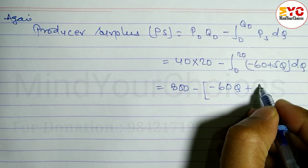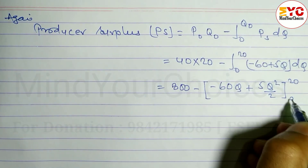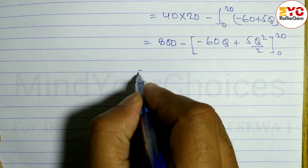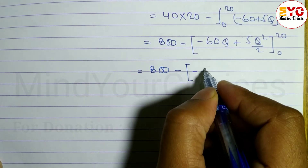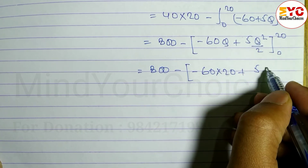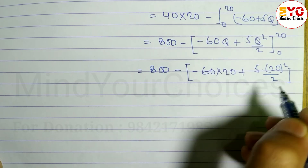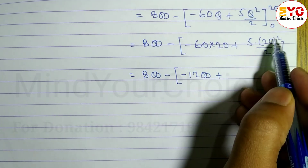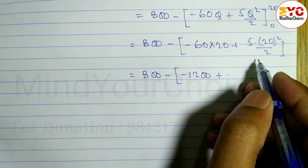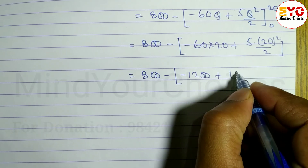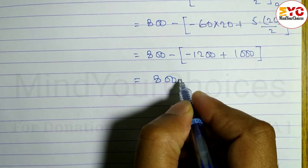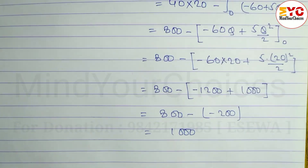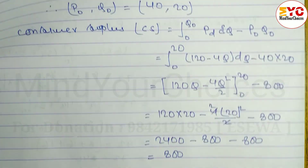Integrating: -60Q + 5Q²/2, evaluated from 0 to 20. Putting Q = 20: -60 × 20 + 5 × 20²/2 = -1200 + 5 × 400/2 = -1200 + 1000 = -200. So producer surplus = 800 - (-200) = 800 + 200 = 1000. Therefore producer surplus PS = 1000.